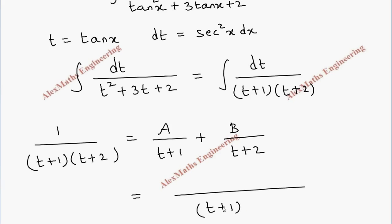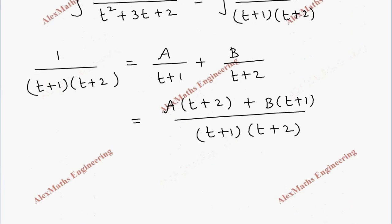So here it will be A into t plus 2 plus B into t plus 1. Now let's equate both the sides numerator. So 1 is equal to A into t plus 2 plus B into t plus 1.